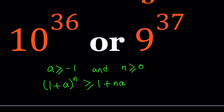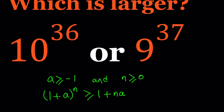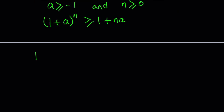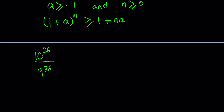Notice that the powers 36 and 37 are pretty close, so I'm going to divide 10 to the power 36 by 9 to the power 37. The idea is: if you can prove this is greater than 1 or less than 1, you can compare those two numbers. We're going to compare it to 9 to the power 36 first because they have the same exponent. Let's write this as (10/9) to the power 36.